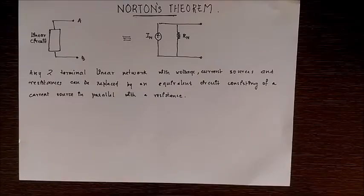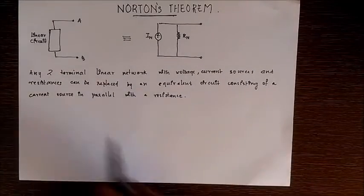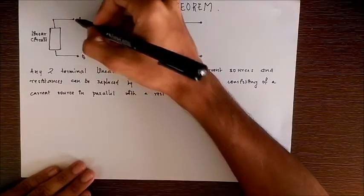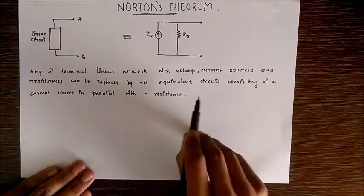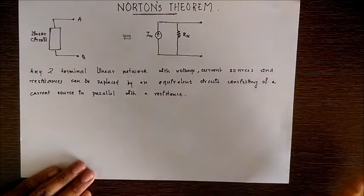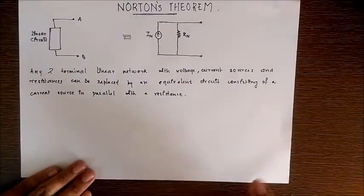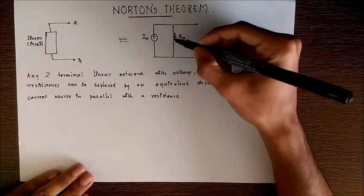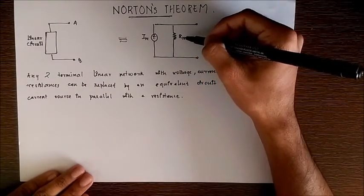First, what is Norton's theorem? Norton's theorem states that any two terminal linear network with voltage, current sources and resistances can be replaced by an equivalent circuit consisting of a current source in parallel with a resistance.